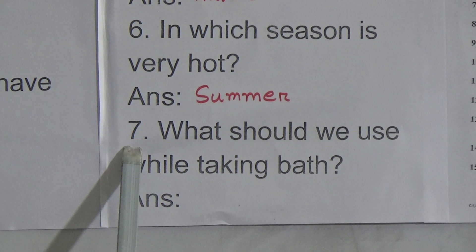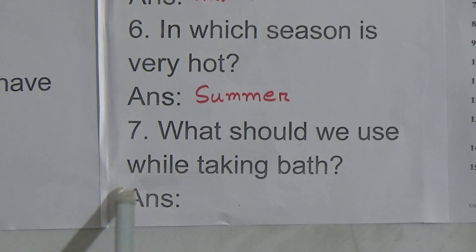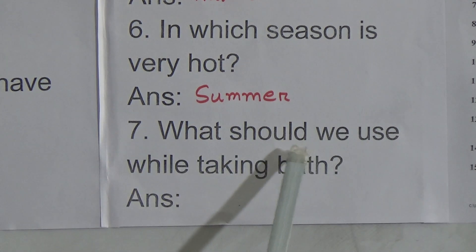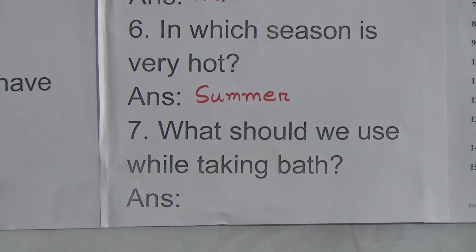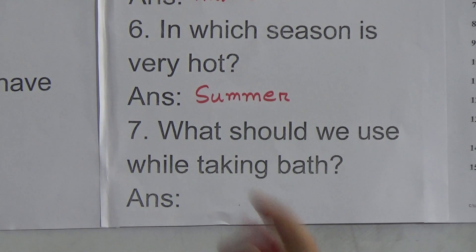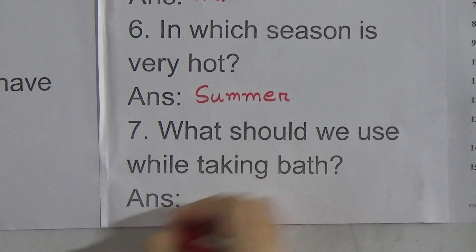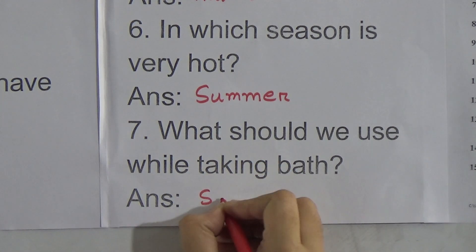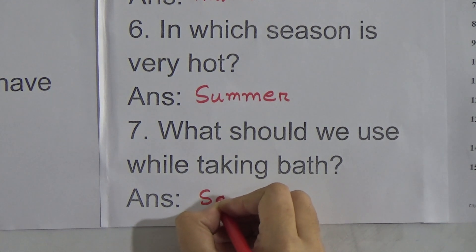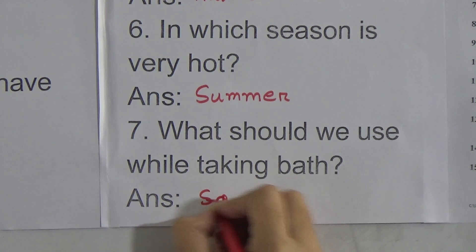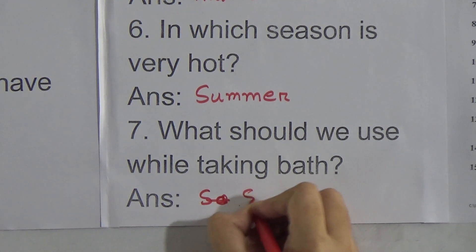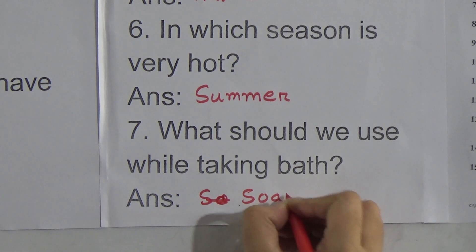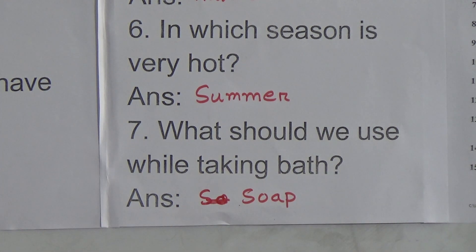Seven number, that means the last one: what should we use while taking bath? We use soap and water. But we can only write one thing. So, we will write here — soap.